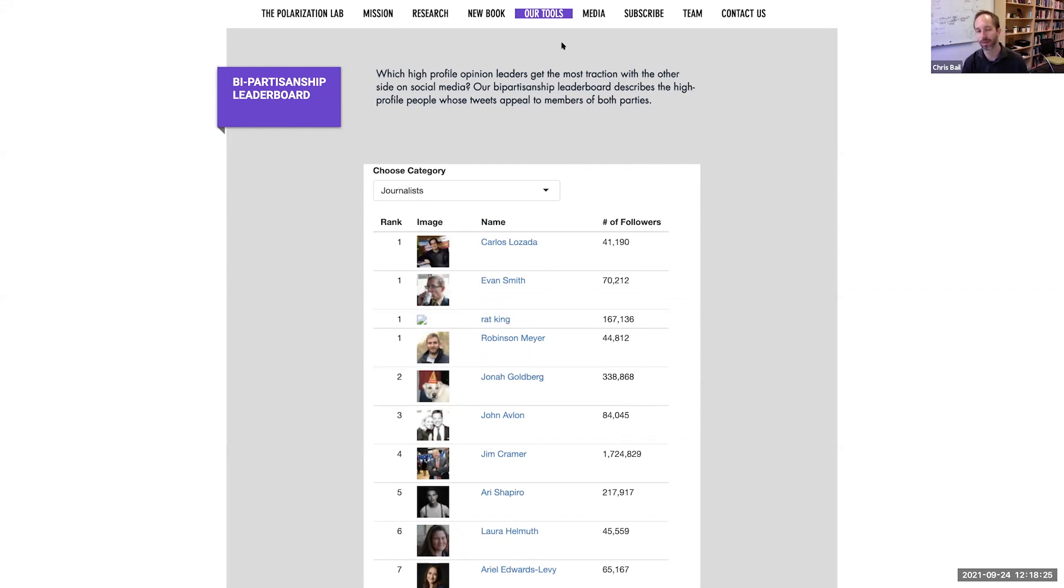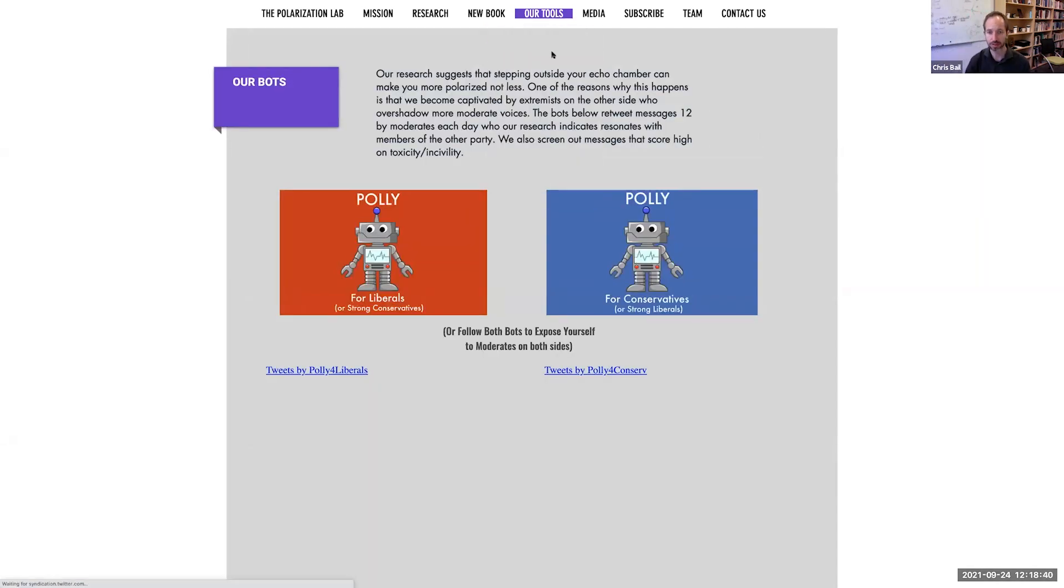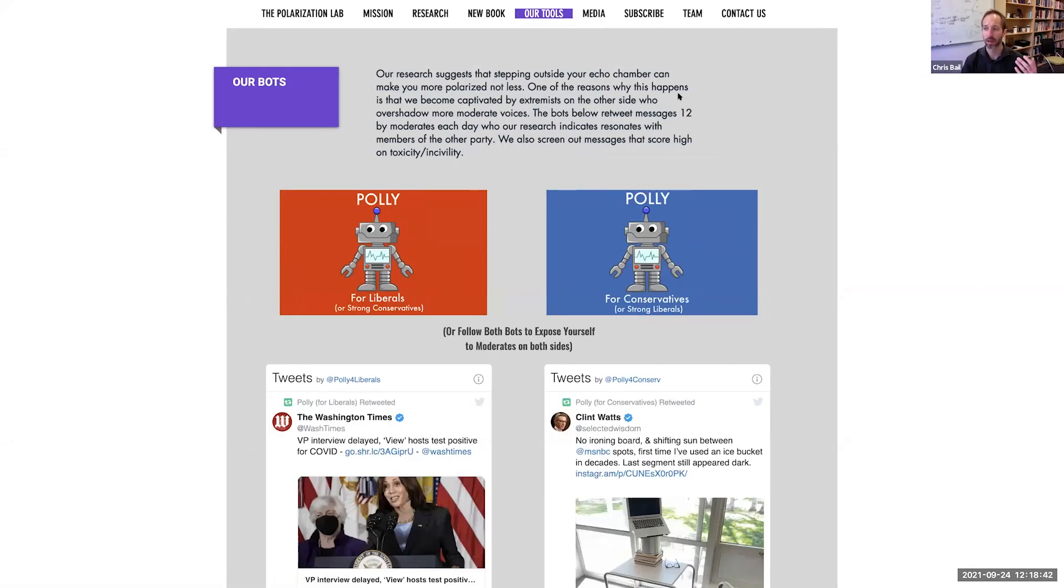Is everybody going to come to the bipartisanship leaderboard on polarizationlab.com? Unfortunately, no. We can publish a piece in CNN or New York Times and get a little blip of attention. But how do you make it habit? Well, here's where our bots come in. These two bots, which we call Poly, automatically retweet messages from people on either side who we know real Republicans and Democrats are both liking.